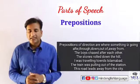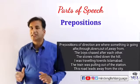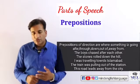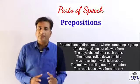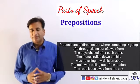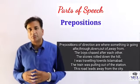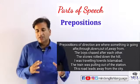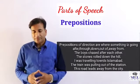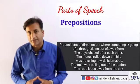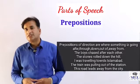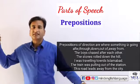Prepositions of direction — یہ جو ہیں کسی direction کو بتاتے ہیں کہ کوئی چیز کہاں جا رہی ہے۔ after، down، through، towards، out of اور away from — یہ prepositions of direction کے طور پر use ہوتے ہیں۔ 'The boys chased after each other' — بچوں نے ایک دوسرے کا پیچھا کیا۔ 'The stones rolled down the hill' — پتھر پہاڑی سے نیچے گرے۔ 'I was traveling towards Islamabad' — میں اسلام آباد کی طرف سفر کر رہا تھا۔ 'The train was pulling out of the station' — جو train تھی وہ station سے باہر کی طرف نکل رہی تھی۔